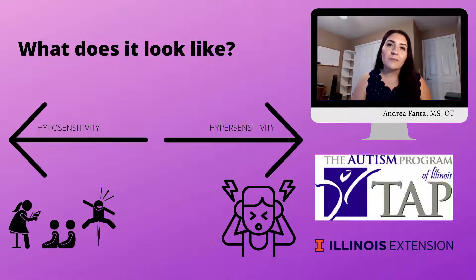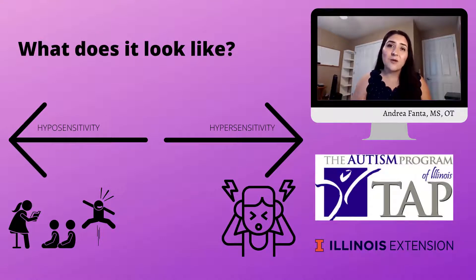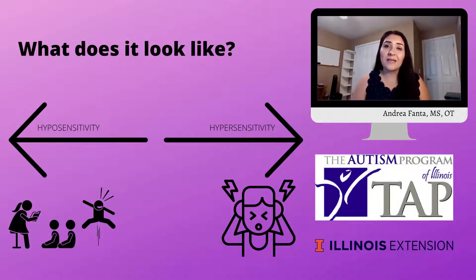For example, when a child is under-responsive to the proprioceptive system, that child can be constantly seeking more information of that kind and will be labeled as the risk-taker or the troublemaker because they're going to enjoy pushing and pulling, and will have a hard time staying still in the classroom.